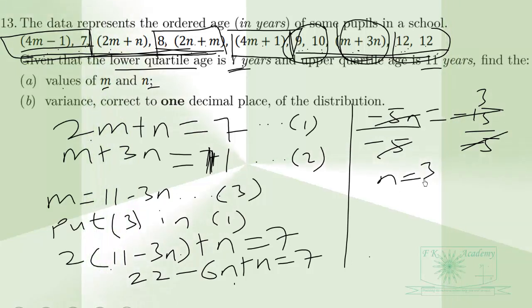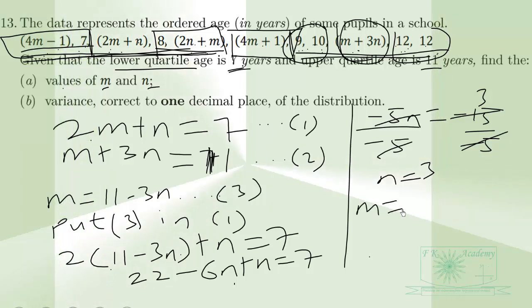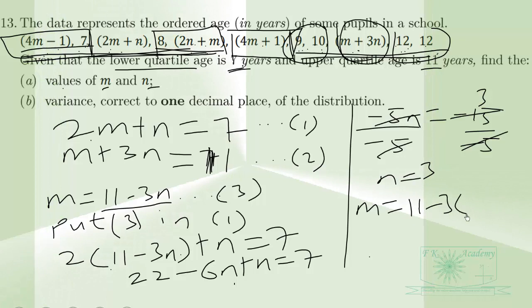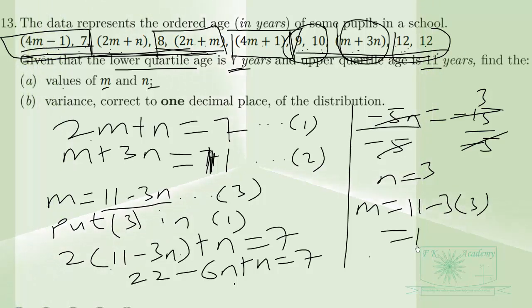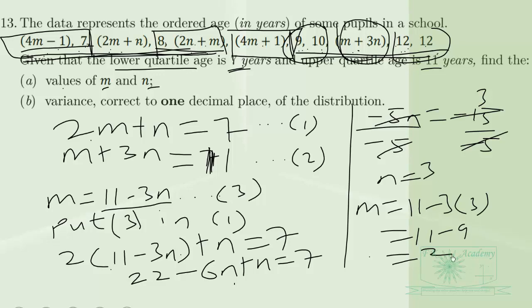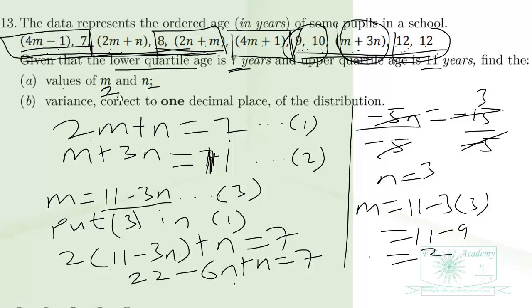If the value of N is 3, then M = 11 − 3(3) = 11 − 9 = 2. Therefore M is 2 and N is 3.